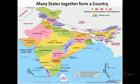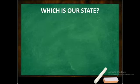Many states together — like Karnataka, Maharashtra, Andhra, Telangana, Gujarat, Madhya Pradesh, Rajasthan — there are many states, and all these states together make a country: India.